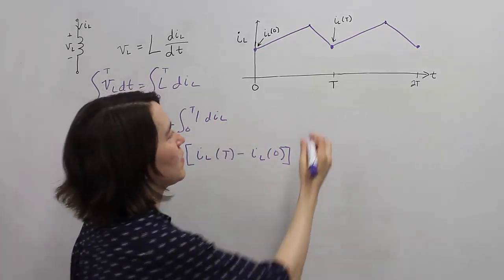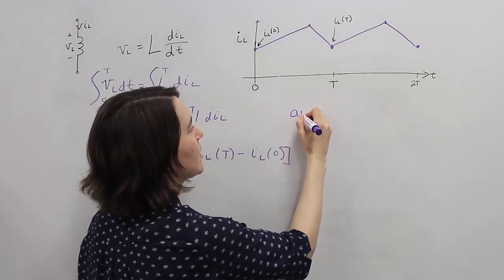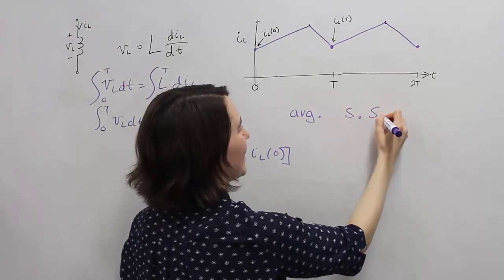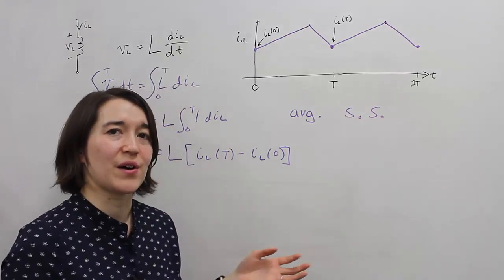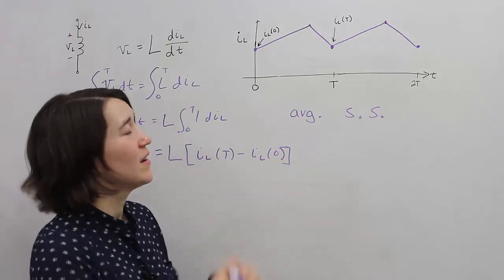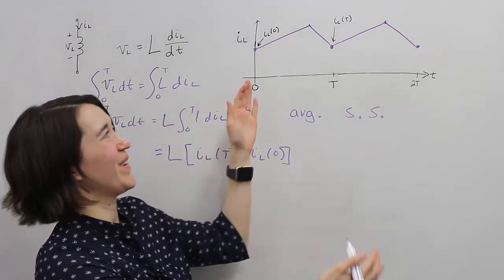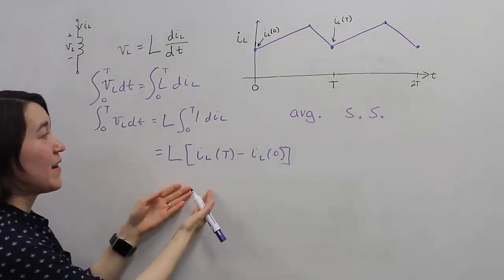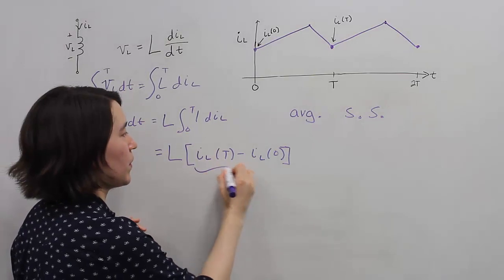In this system, again, we're assuming average steady state. We're assuming the average value is not going to be changing that much at all over time. Then we mean that this value will exactly be 0.